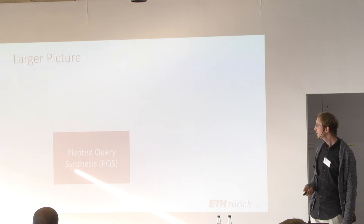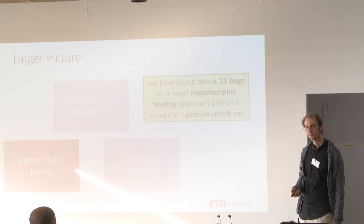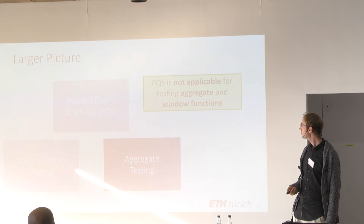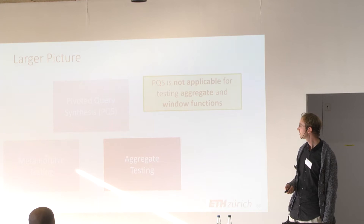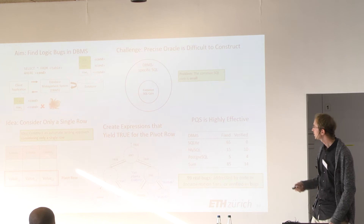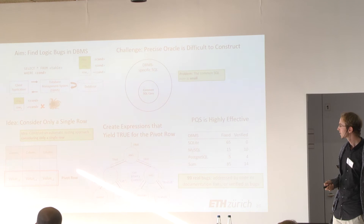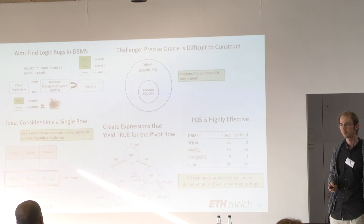Pivoted Query Synthesis is effective, but it is only one of the approaches we have been working on. Recently we also worked on a metamorphic testing approach where we found a way to construct a precise result set, finding about 15 additional bugs. We have also started working on testing aggregate and window functions to compensate for the limitation in Pivoted Query Synthesis. In summary: I presented our goal of finding logic bugs in database management systems, showed that existing approaches such as differential testing are not really applicable to this domain, explained our idea of considering only a single pivot row to construct an automatic testing approach and oracle, and showed that we were quite successful in finding bugs in important database management systems. Thank you.